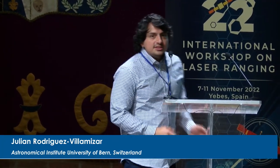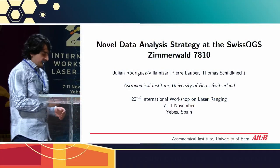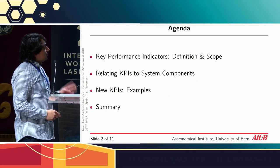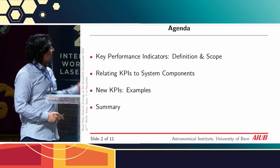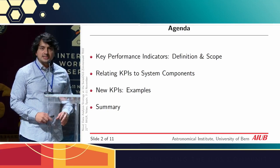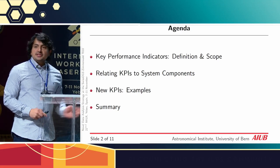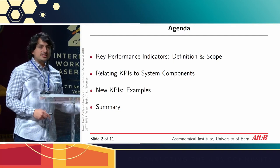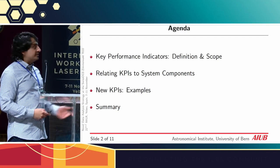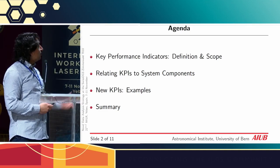What this talk is about is how can we make use of historical data to retrieve key performance indicators. We are going to focus on four points: the first one is the definition of what is a KPI; the second is how we can relate those KPIs to specific system components; we will provide new potential KPIs to be implemented; and a short summary highlighting the main output of the presentation.